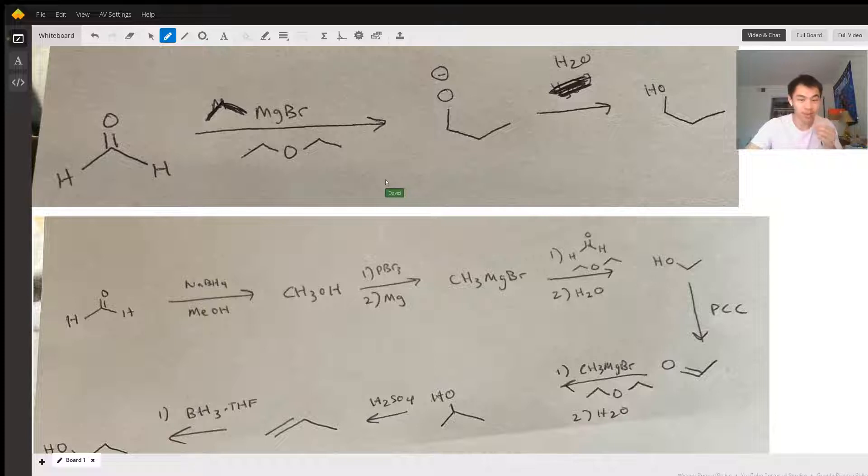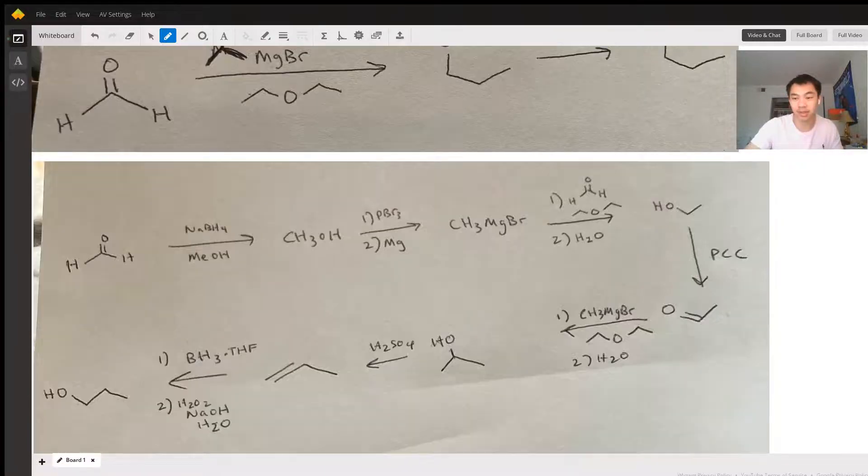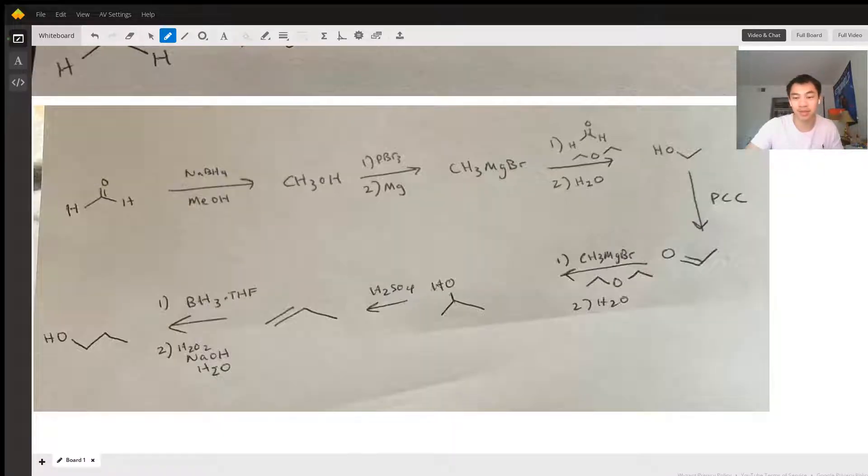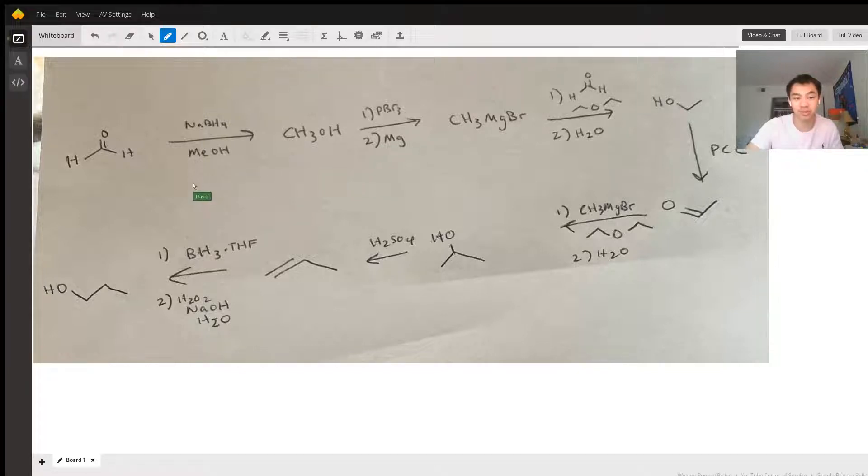That's assuming formaldehyde isn't your only carbon source. The reason I included that is because if you only use formaldehyde as your carbon source, I had to do like seven steps to get propanol. I'm not sure, maybe your professor is just challenging you, but here is the mechanism I got.